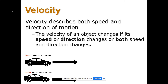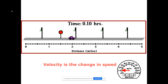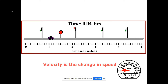Speed only represents what we call magnitude — in physics this is called a scalar quantity. Velocity, because it includes direction, is called a vector quantity. So this car covering distance in a certain amount of time describes speed, but if we say this car is traveling towards school, we've described its velocity.